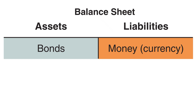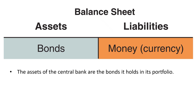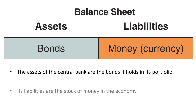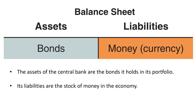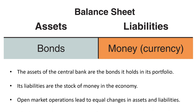This is a balance sheet of a central bank. The assets of the central bank are the bonds it holds in its portfolio. Its liabilities are the stock of money in the economy. An open market operation leads to equal changes in assets and liabilities.